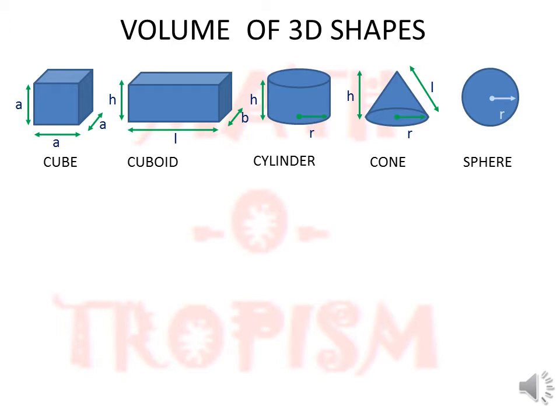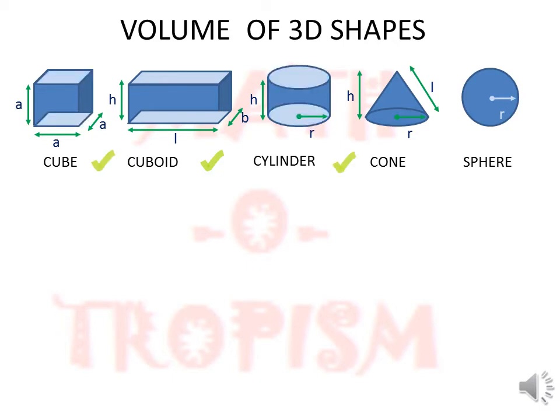Here I am going to consider 3D shapes which have the same figure at both the top and bottom. For example, a cuboid has a rectangle on top and bottom, a cube has a square, and a cylinder has a circle at the top and bottom.